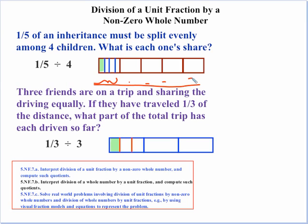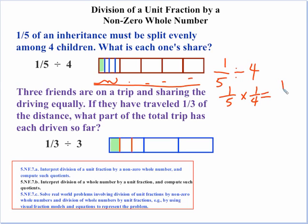Again, we had one-fifth divided by four, which equals one-fifth times one-fourth. So each of the children is going to get one-twentieth of the whole inheritance.